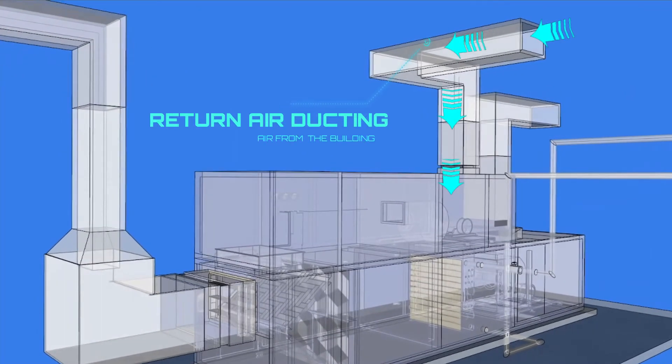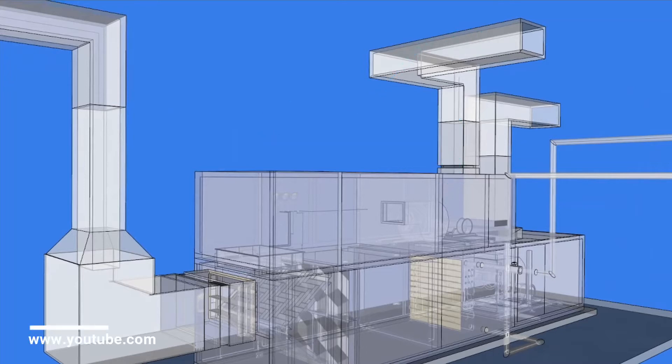The return air supply in its simplest form has just a fan and damper inside. The fan is pulling the air in from around the building and then pushing it out of the building.